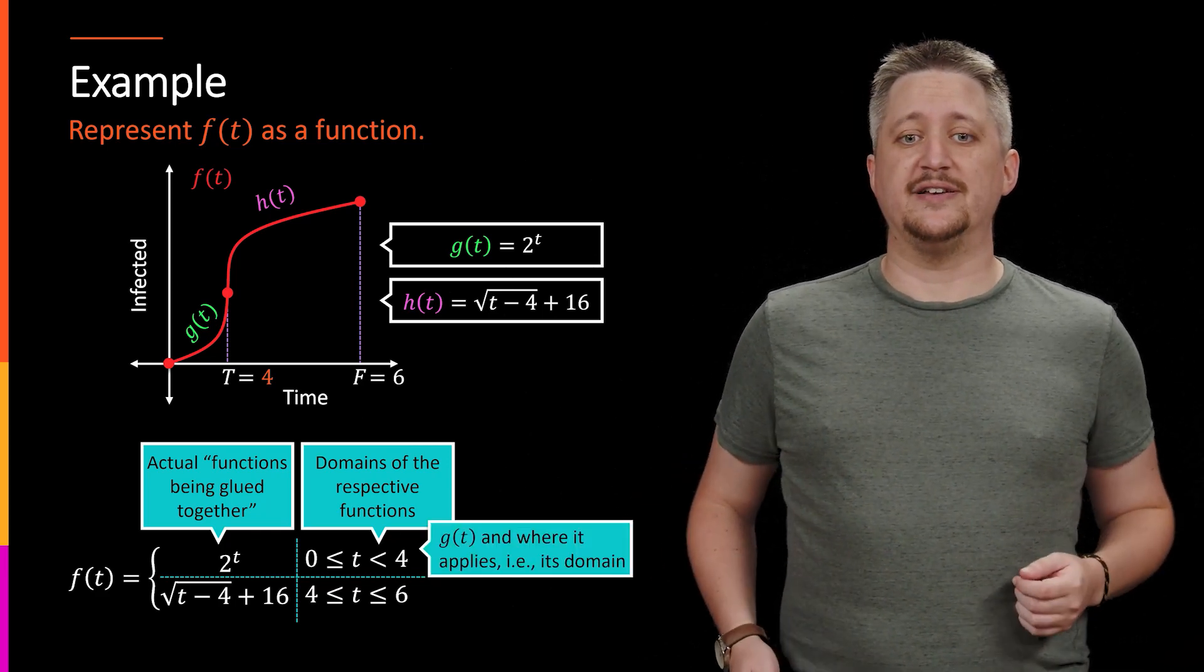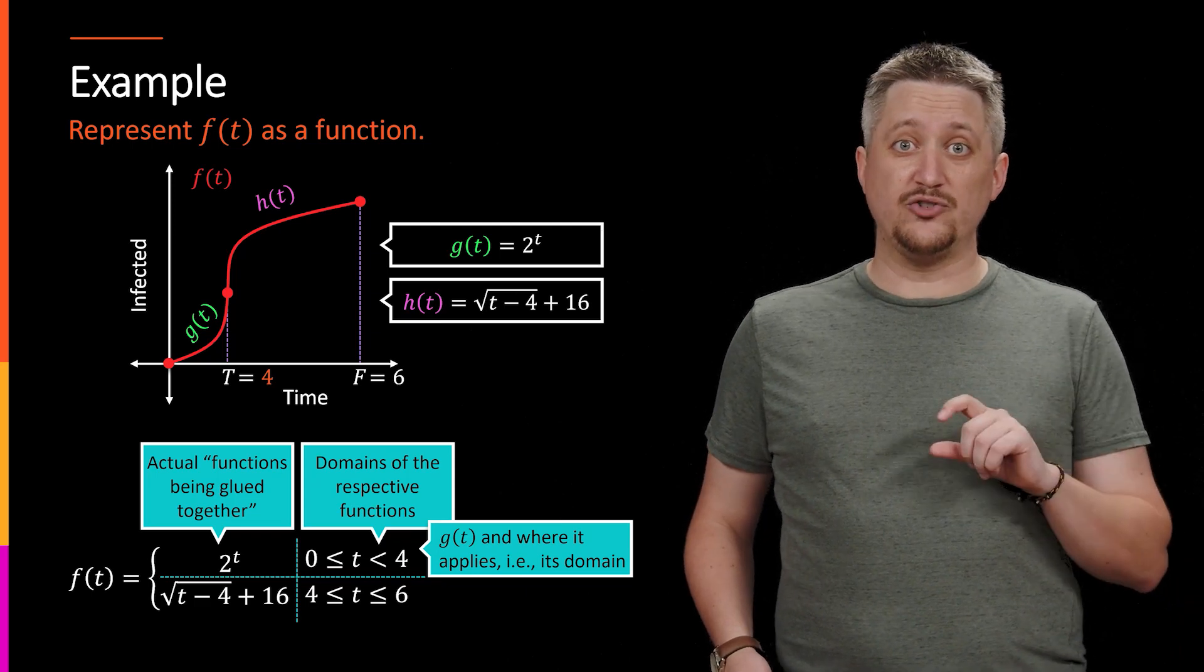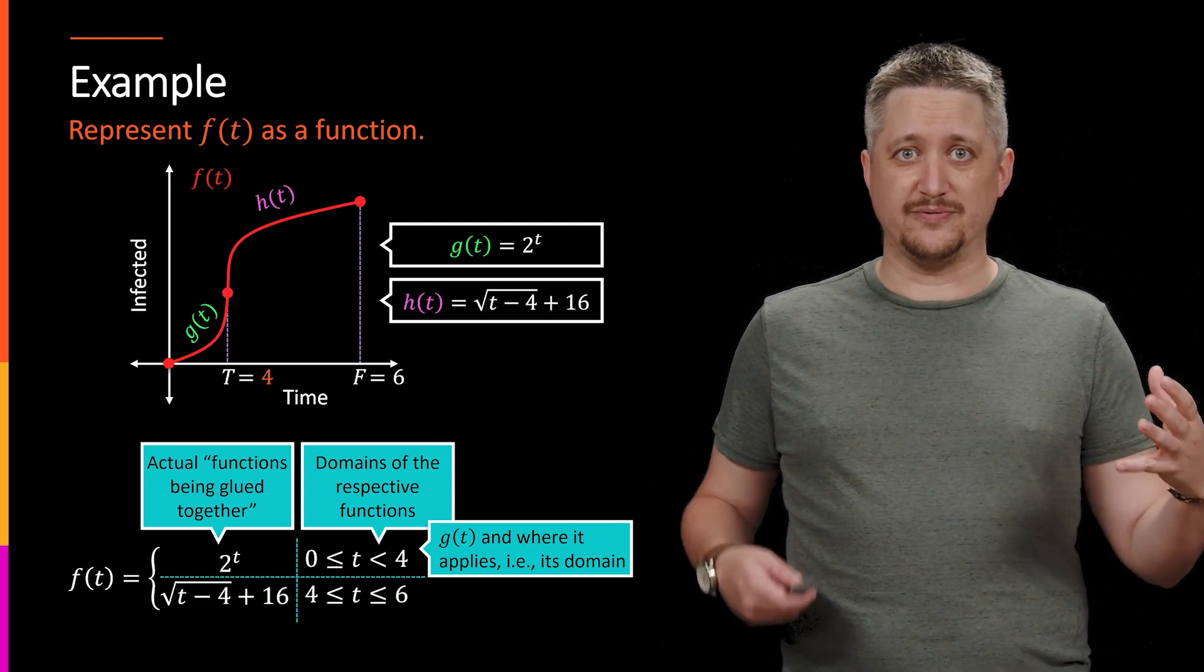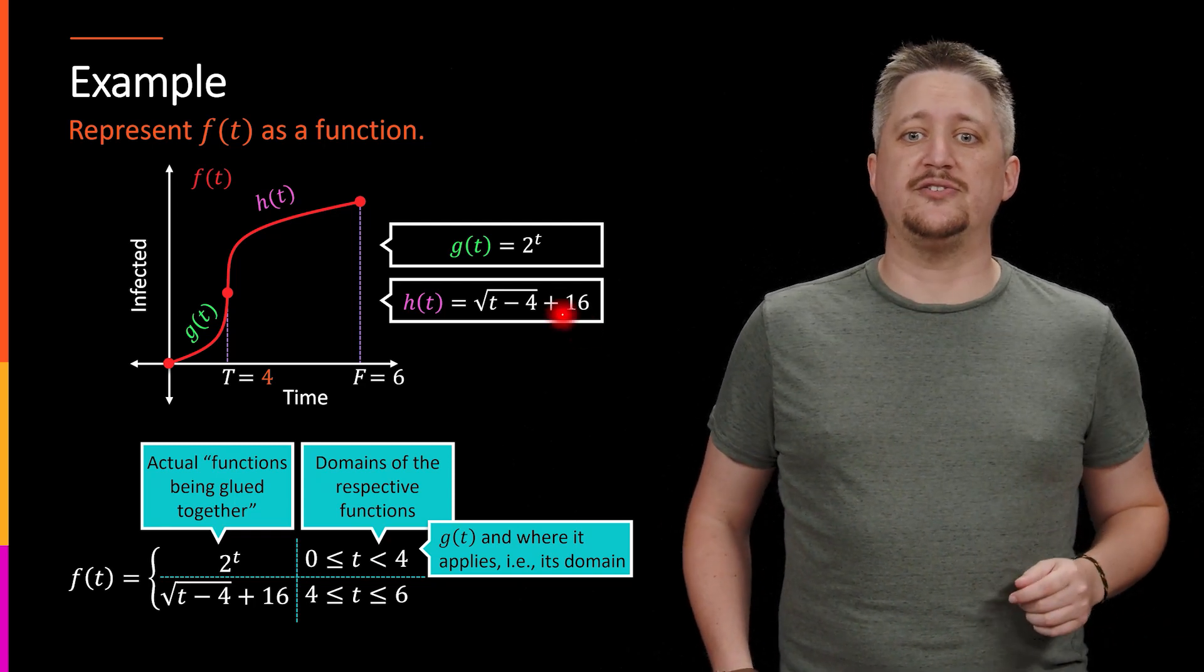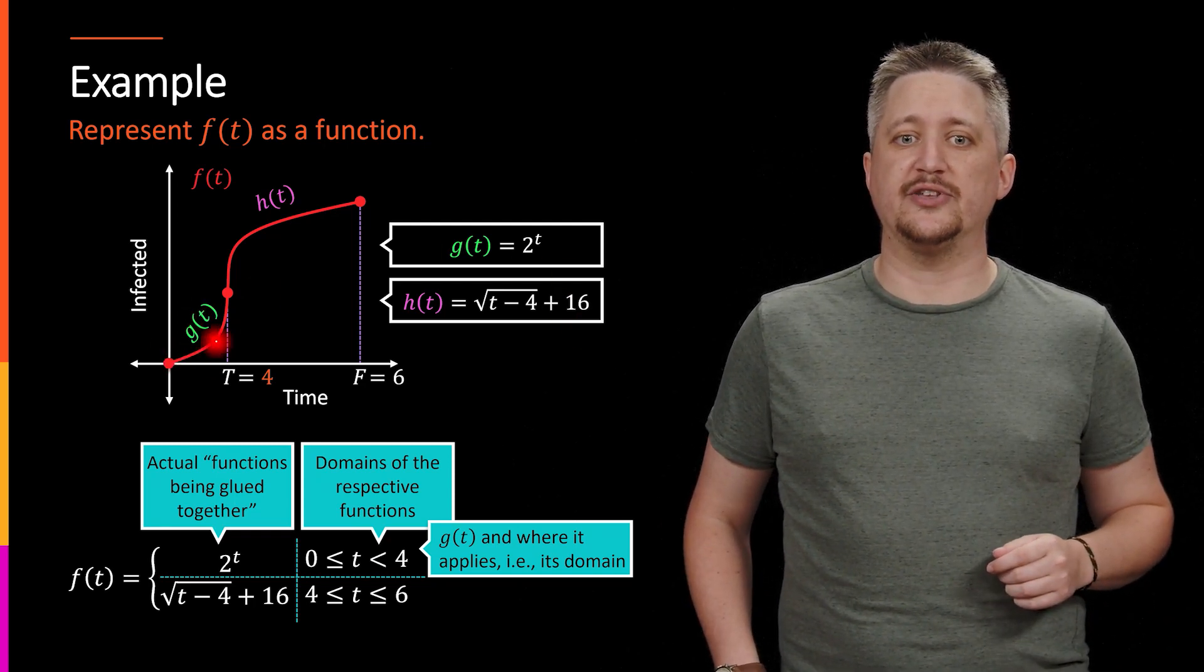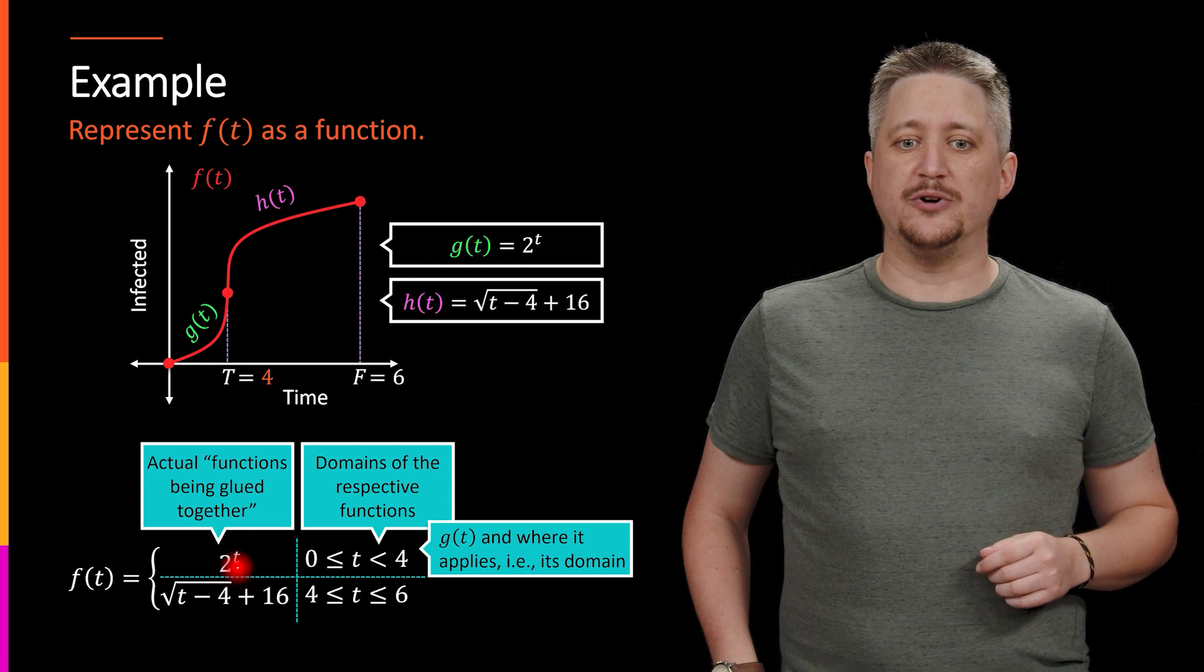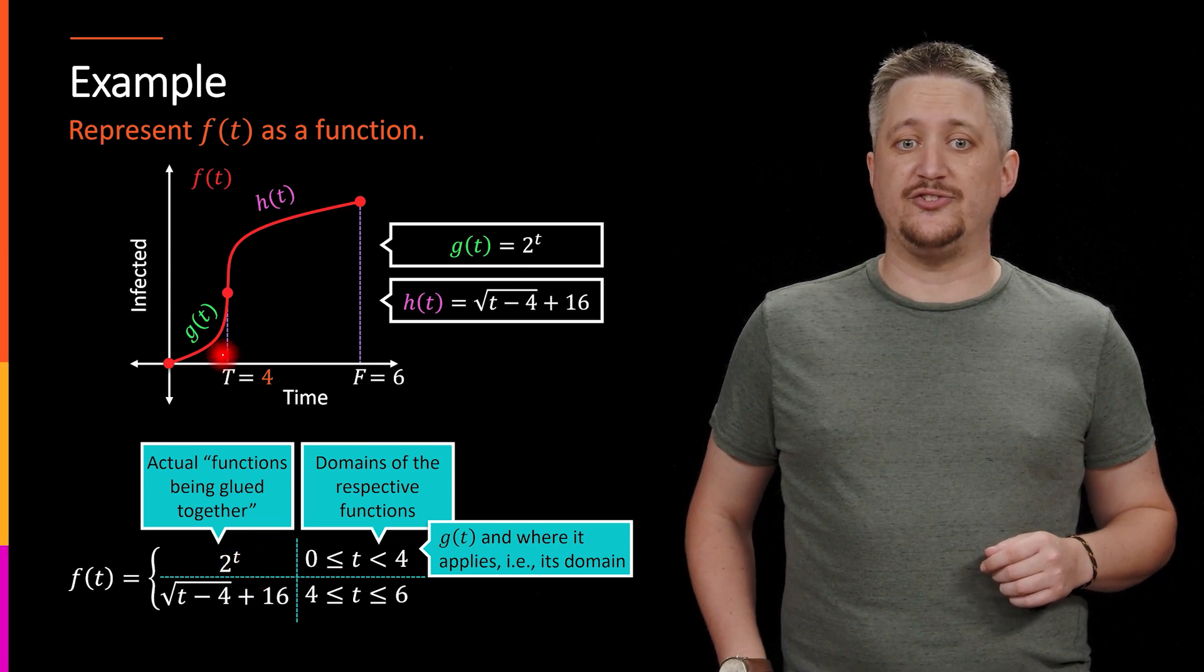But row wise, we can also think of this as each row is sort of a function and where that function is taking place. So the first row then is going to be our G of T, that's the first thing happening. So our first one is this 2 to the T, because that's G of T.